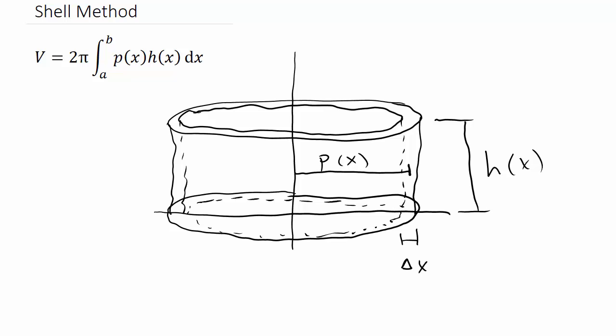In this video we're going to look at using the shell method. We're going to revolve a graph about an axis or a line and find the volume of the solid of revolution.